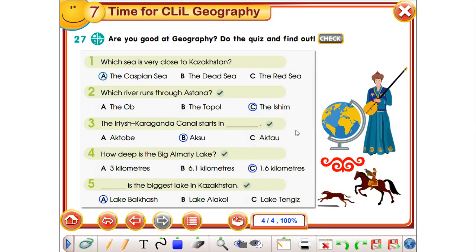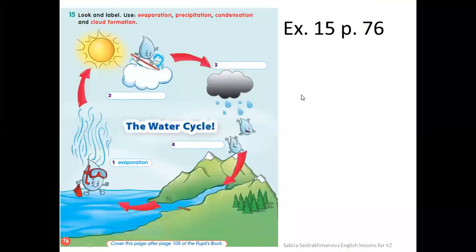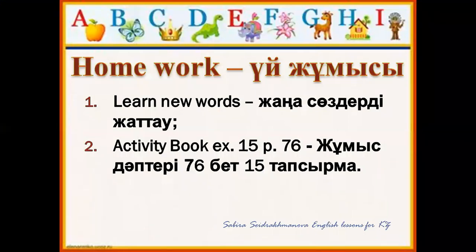Research these questions and answers on the internet and read some interesting information. Our homework is exercise number 15, page 76 in the activity book — look and label using the words: evaporation, precipitation, condensation, and cloud formation. We'll be able to learn new words from the activity book, exercise number 15, page 76. Bye-bye!